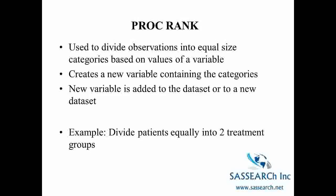A SAS utility procedure that we will make use of in the SAS demonstration of random sampling is PROC RANK. So PROC RANK is used to divide observations into equal size categories based on the values of a variable. And within PROC RANK you can create a new variable containing the categories. And the new variable is then added to the data set or to a new data set. And so one way that PROC RANK is helpful is when you need to divide patients equally into two treatment groups.